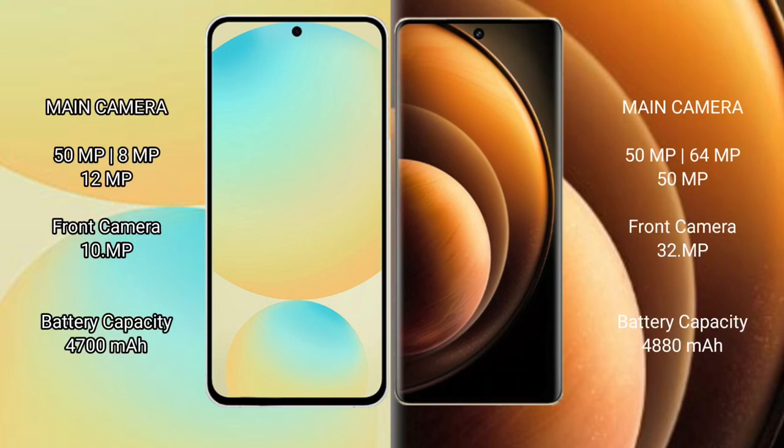Samsung Galaxy S24 FE features a triple camera setup with 50MP, 8MP, and 2MP sensors, plus a 10MP front camera. Vivo X100 also features a triple camera setup with 50MP, 64MP, and 50MP sensors, plus a 32MP front camera.